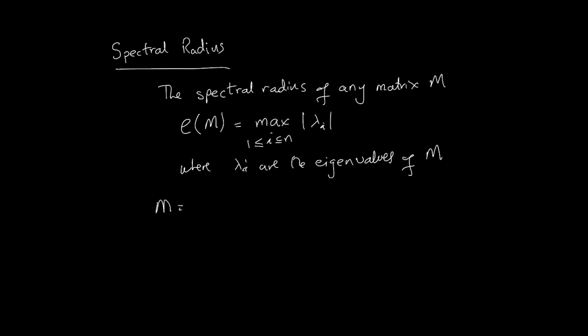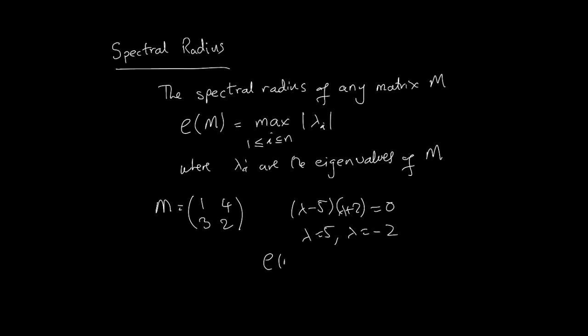As a quick example, if we look at a matrix M equal to [1, 4; 3, 2], this has a characteristic equation which is (lambda minus 5)(lambda plus 2) equals 0, which means lambda equals 5 and lambda equals minus 2. These are the two eigenvalues of this matrix. So rho of M would of course be 5, and that's the spectral radius. That's how we calculate the spectral radius.